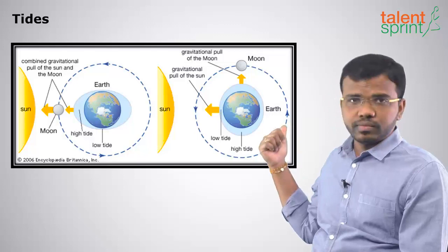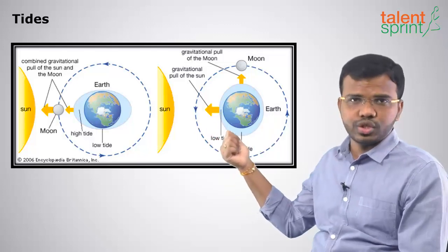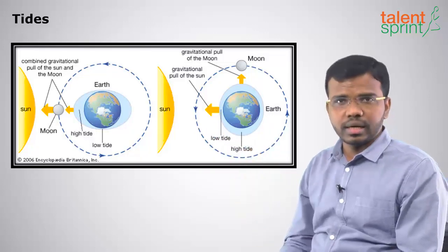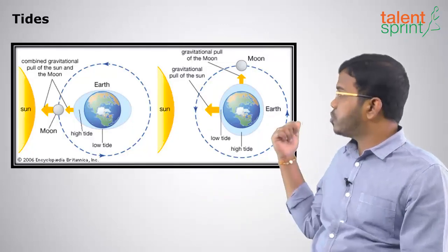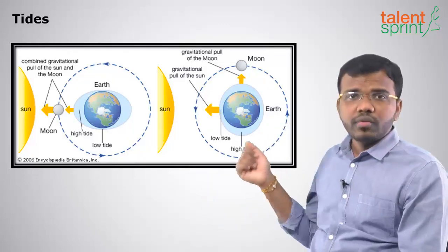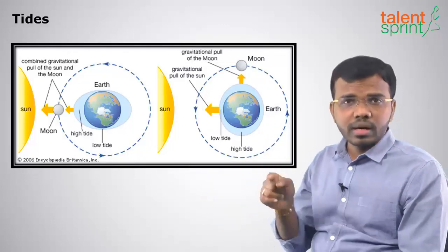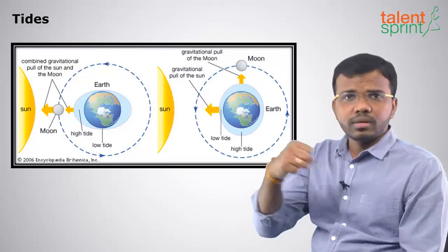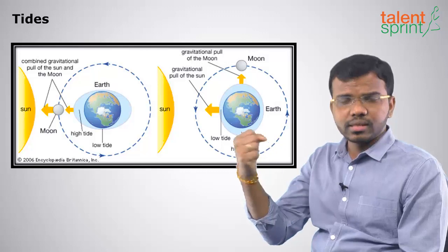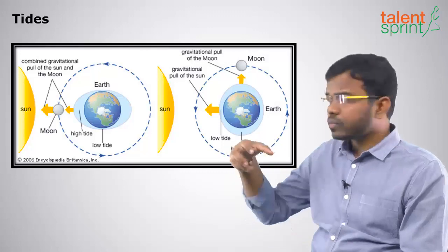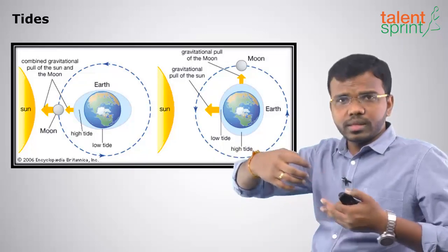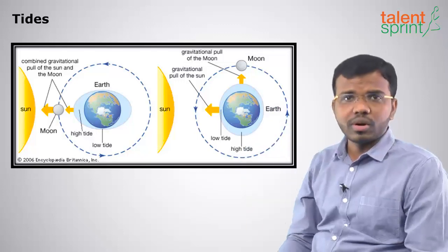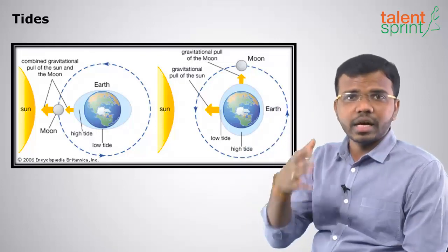The first position is called the syzygy position, when the sun, moon and earth are in a straight line. The next position is the opposition position when the sun, moon and earth are at right angles to each other. As the moon's pull is greater than the sun's pull, where the moon is present, the moon will be pulling more, so on that direction we have high tides.